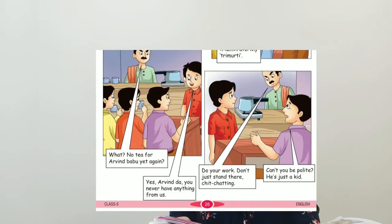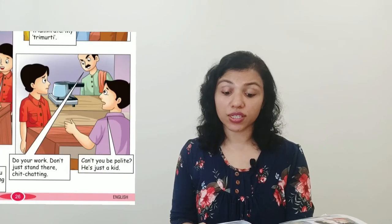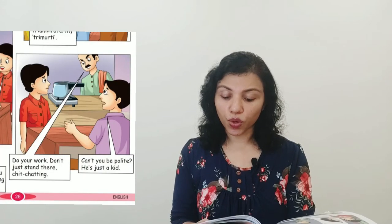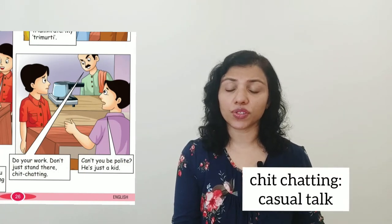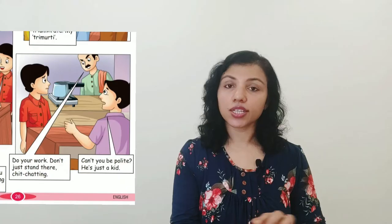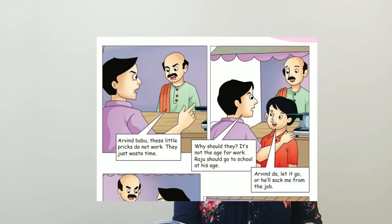'What, no tea for Arvind Babu yet again?' — that is what the owner is asking. 'Yes, Arvinda, you never have anything from us' — that is Raju saying that. Raju is asking why Arvind doesn't also have some tea. Then the tea stall owner starts shouting at Raju: 'Do your work, don't stand here chit-chatting!' Chit-chatting means engaging in silly conversation. Then Arvind says: 'Can't you be polite? He is just a kid.'